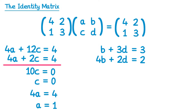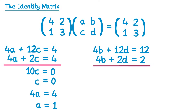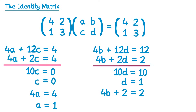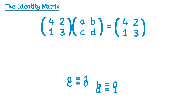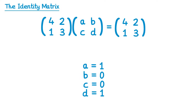We do a similar thing with the right set of equations — again multiply the top one by four and subtract: four b minus four b is zero, twelve d minus two d is ten d, and twelve minus two is ten. So ten d equals ten, meaning d equals one. Substituting back into the bottom equation, four b plus two d — and d is one — so four b plus two equals two. Subtract two from both sides: four b equals zero, so b equals zero. We've found a equals one, b equals zero, c equals zero, and d equals one.